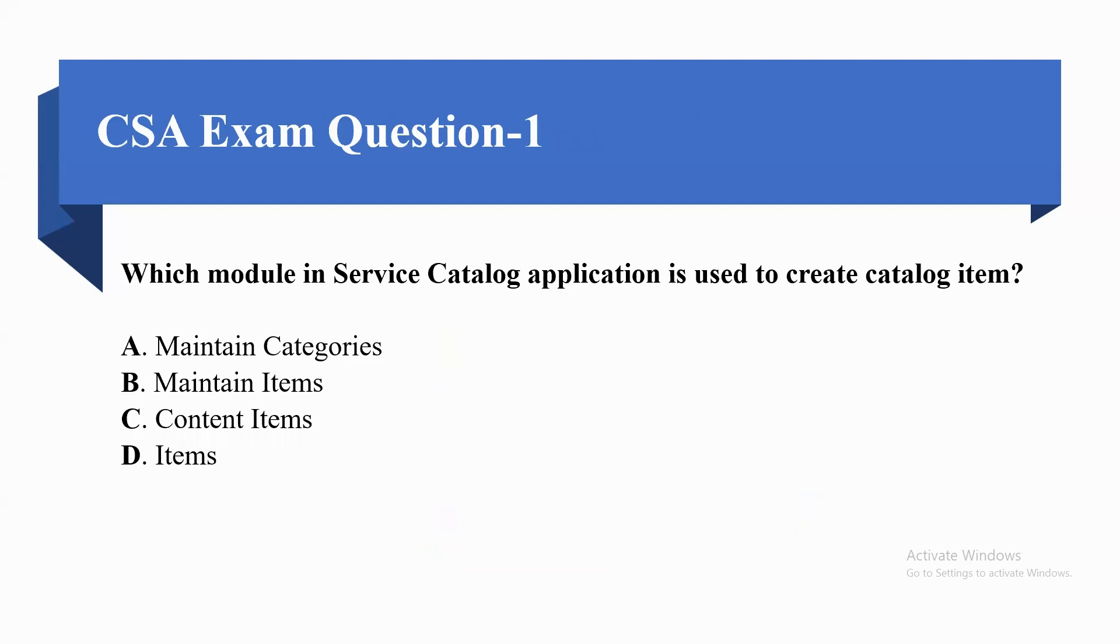Coming towards question number one: which module in Service Catalog Application is used to create catalog items? Options are A. Maintain category, B. Maintain item, C. Content item, D. Item. The correct option would be option B, Maintain item.